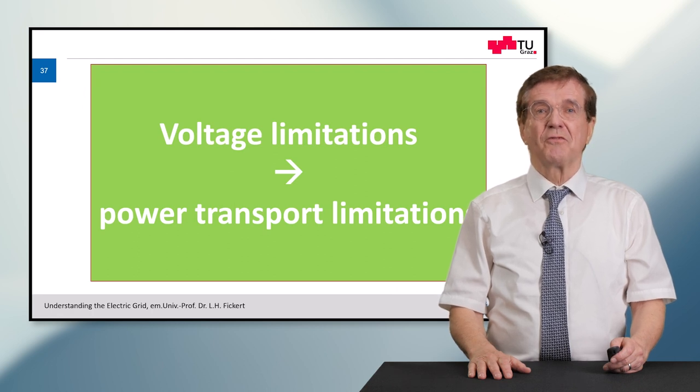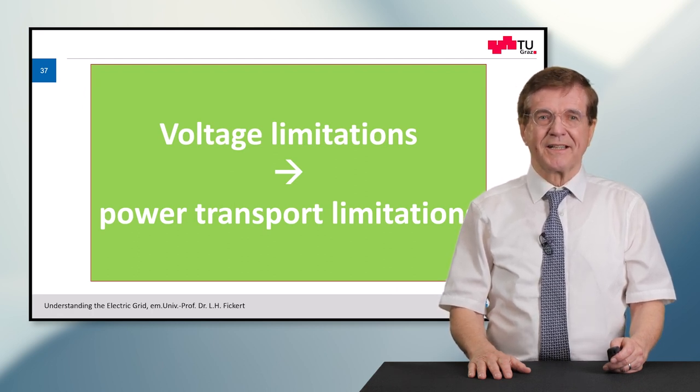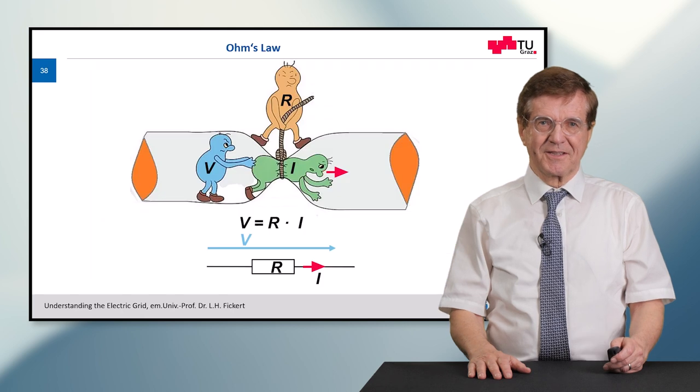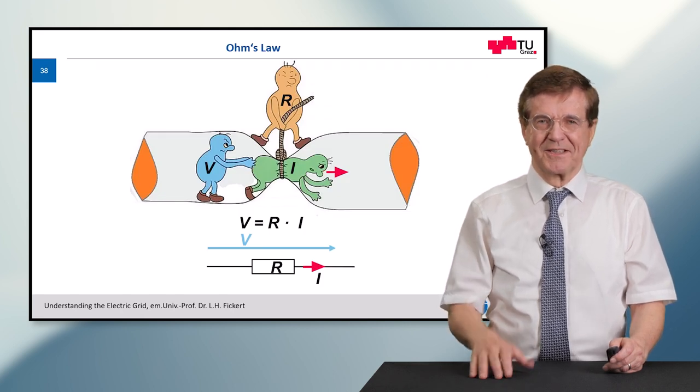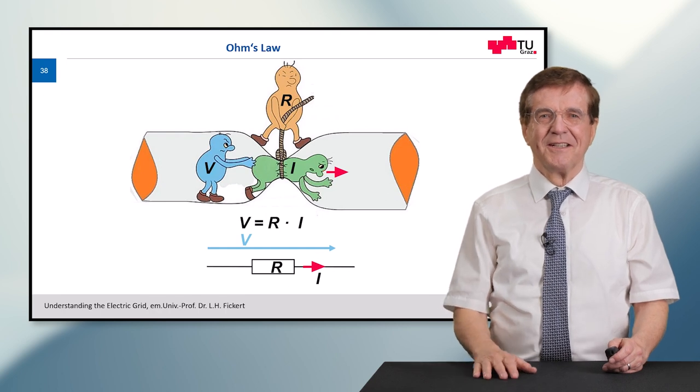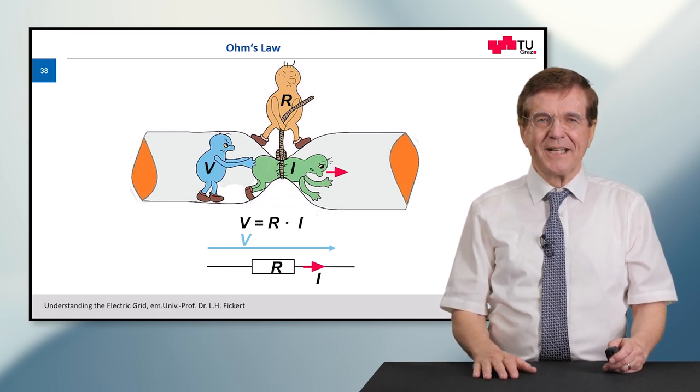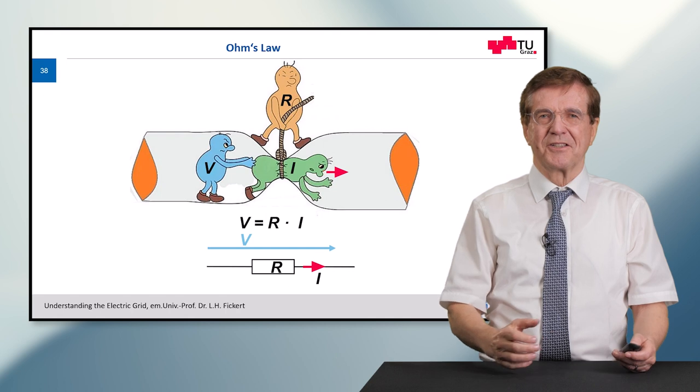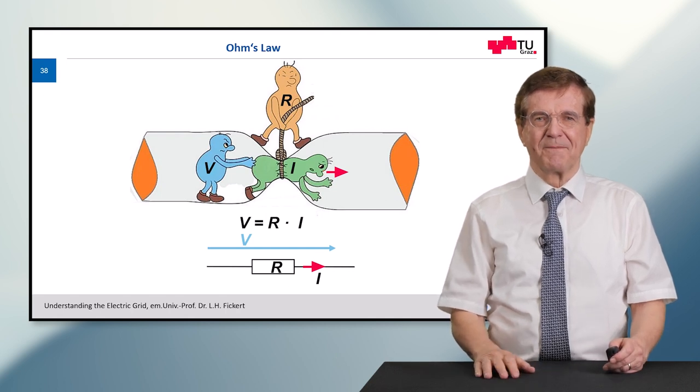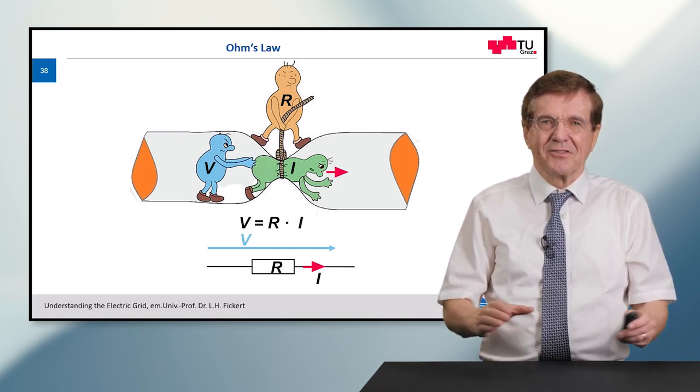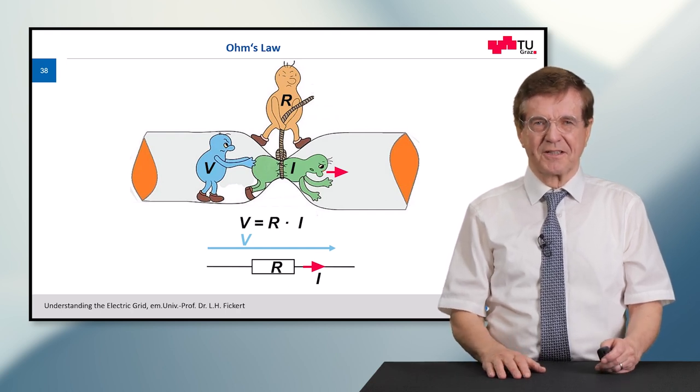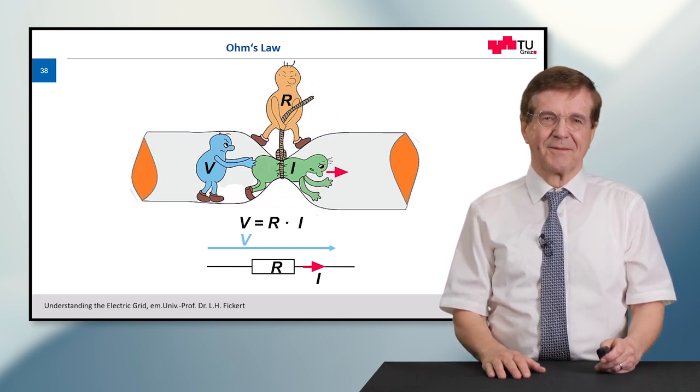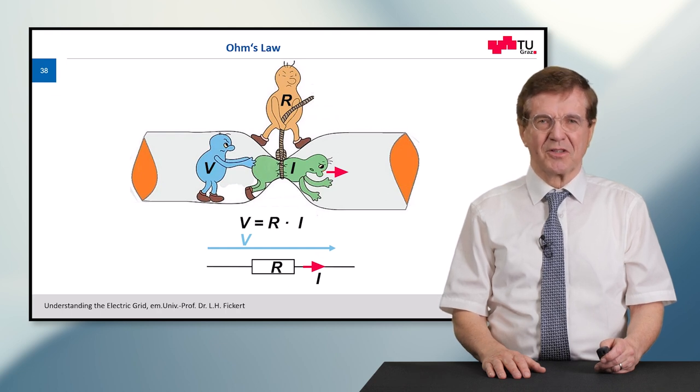As I told you, there are also voltage limitations which lead again to power transport limitations. So the voltage limitations are derived from Ohm's law. You can see here, this is a little joke. The current in green is pushed by the voltage, the little blue person, and the resistance tries to limit the whole things. So the result is voltage across a line is resistance times current. This is the so-called Ohm's law.